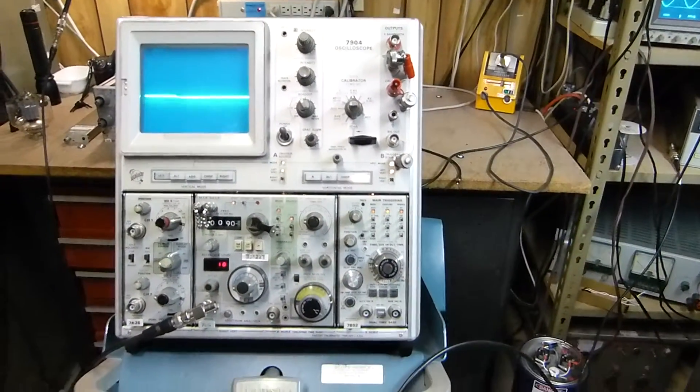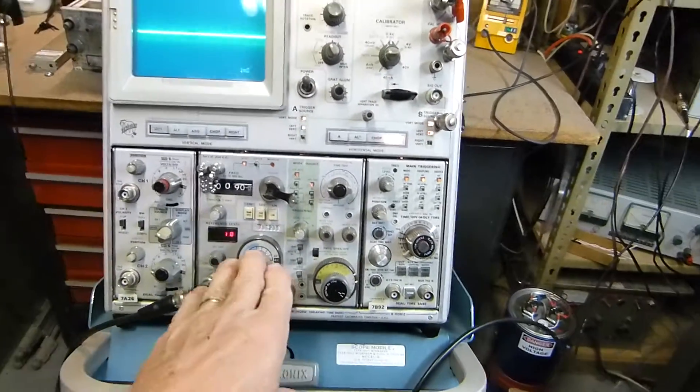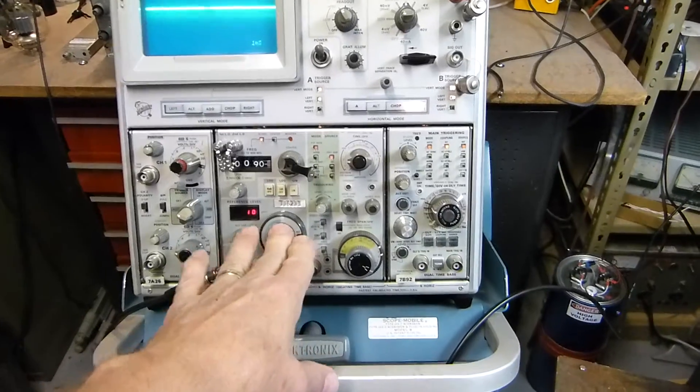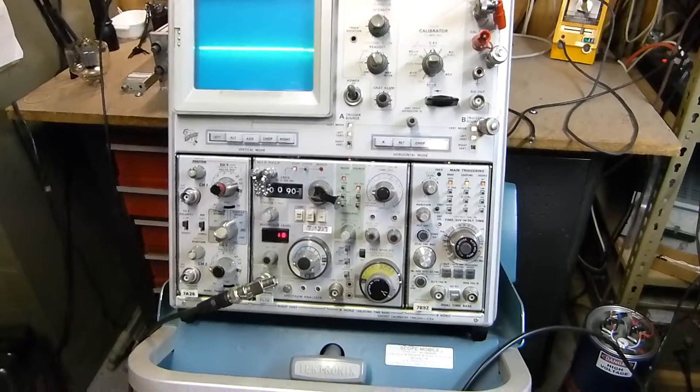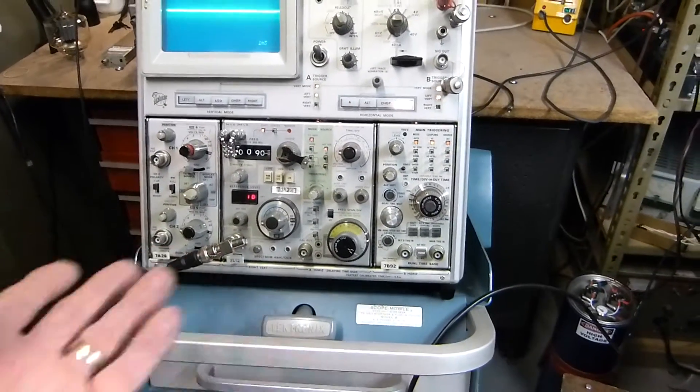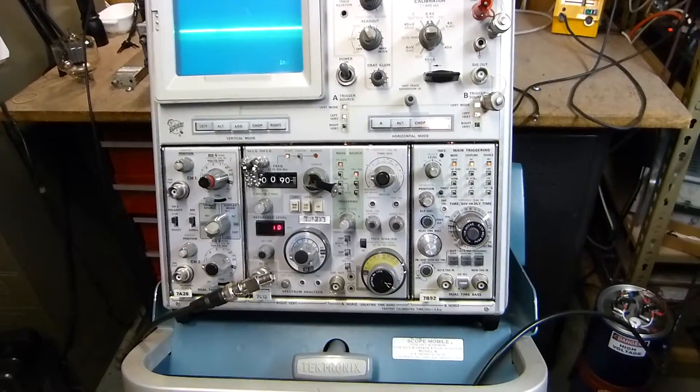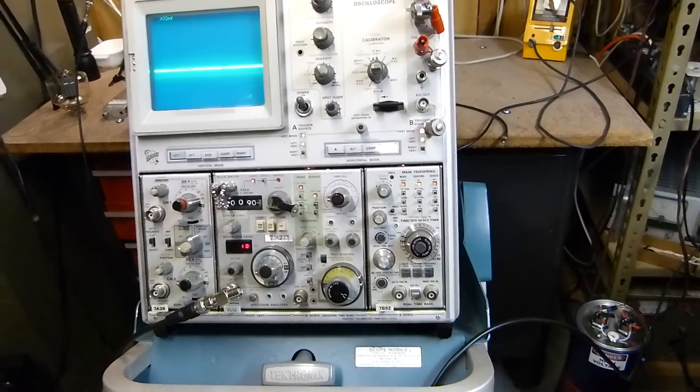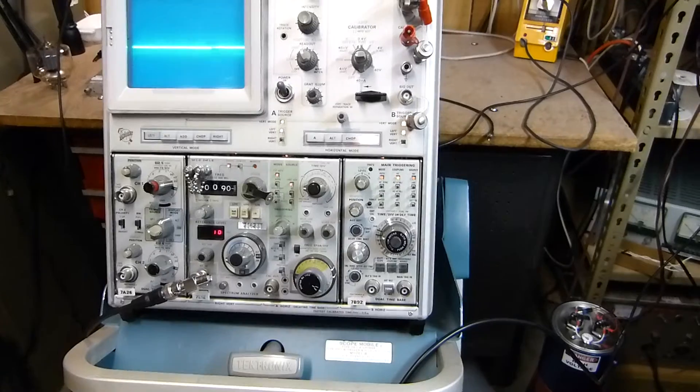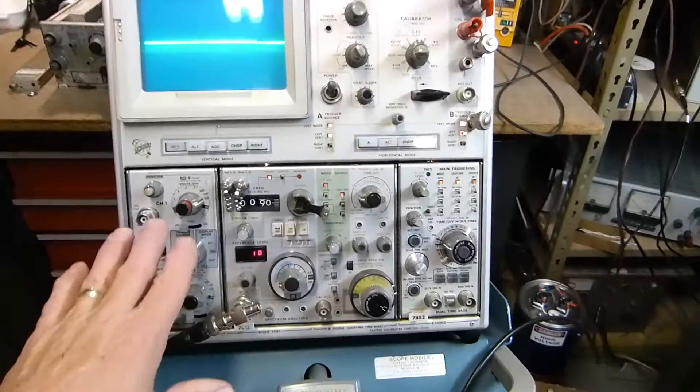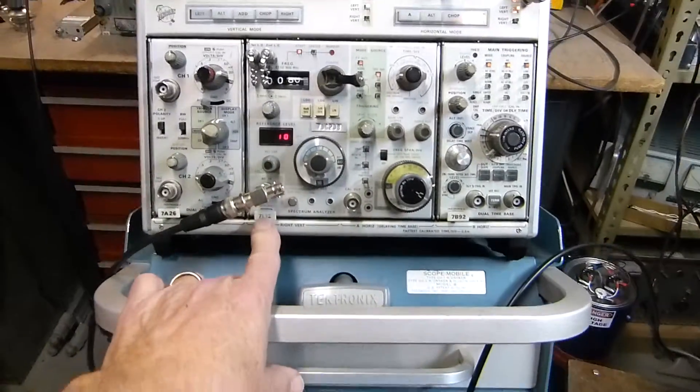You can buy all of the plug-in units that you want. Some of these spectrum analyzers are still not very cheap. Back when these were new, they were $12,000 to $14,000 a piece. Only the government and their contractors could afford them. Fortunately I was one of their contractors, so I got to use this stuff back in the day. Now for pennies on the dollar, I can own them.